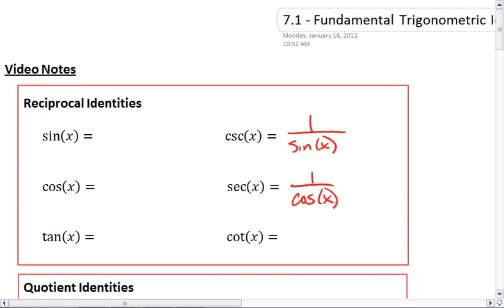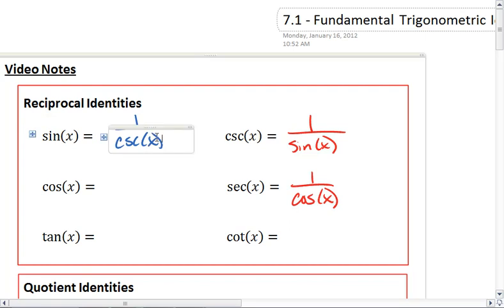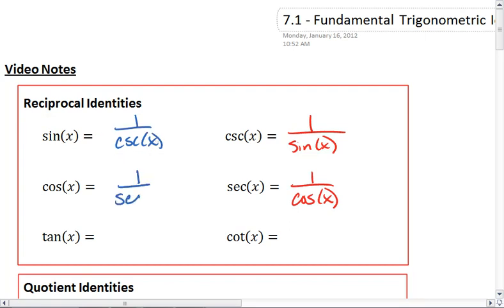This means that sine is 1 over cosecant, because cosecant and sine are reciprocals of each other. Cosine is 1 over secant.